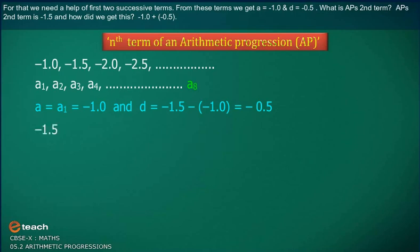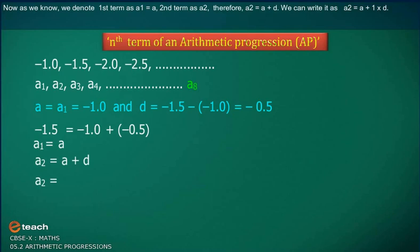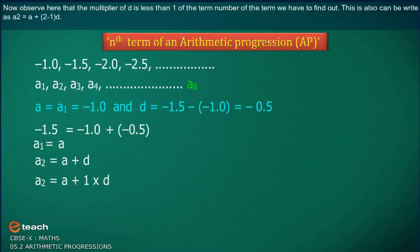The AP's second term is minus 1.5. We get this as: minus 1.0 plus (minus 0.5). We denote the first term as A1 = A, and the second term as A2 = A + D, which can be written as A2 = A + (1)D, or A2 = A + (2 minus 1)D. Notice the multiplier of D is one less than the term number.